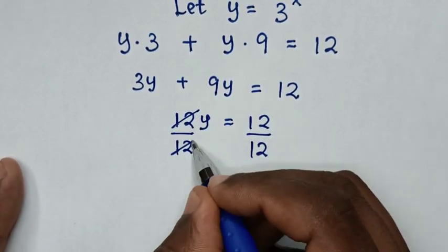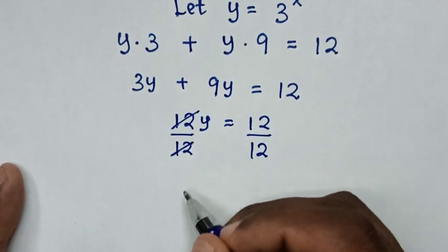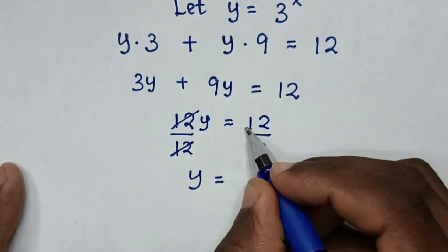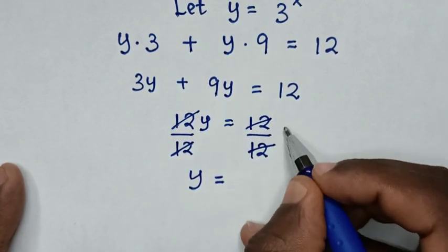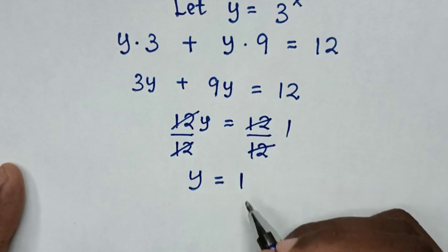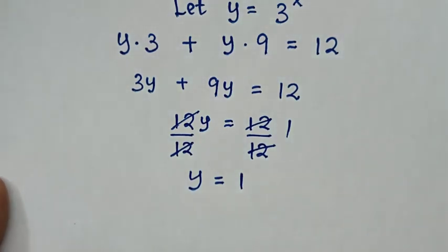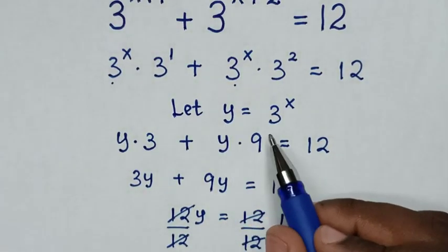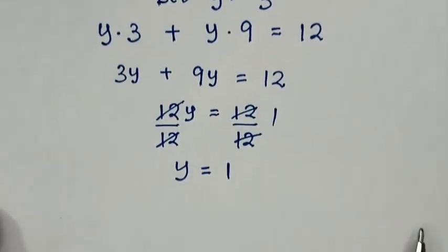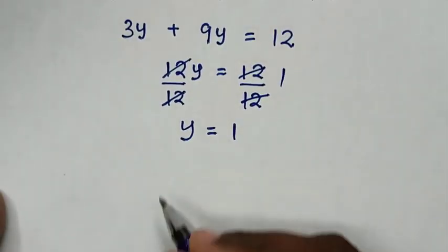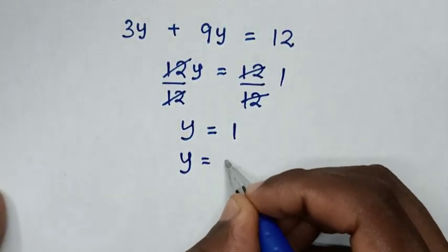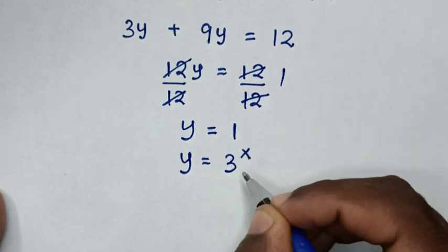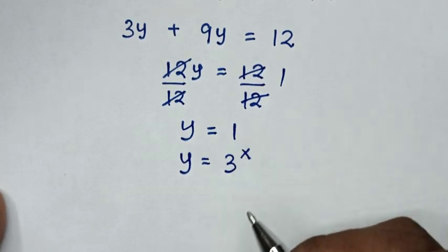The 12s cancel, so y is equal to 1. But before we let y equal to 3^x, so from y equal to 3^x, then 3^x is equal to 1.